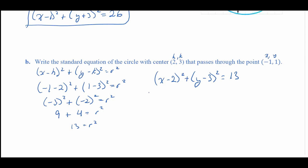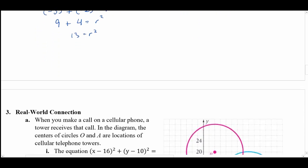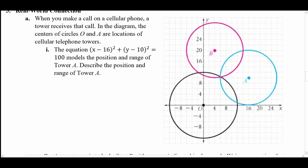Now let's look at a real-world problem. When you make a call on a cellular phone, a tower receives that call. In this diagram, the centers of circles O and A are locations of cellular telephone towers. The equation (x − 16)² + (y − 10)² = 100 models the position and range of tower A. Describe the position and range of tower A.